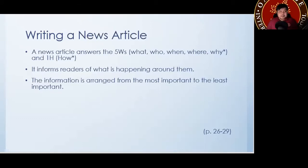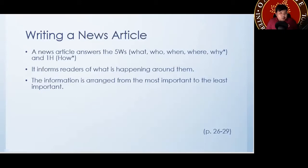Sometimes certain things that happen — the most important thing is the what, so they start with the what, the who, the when, the where. Or sometimes the who is more important, and then followed by the what, the when, and the where. So all of these things are different ways of identifying what a news article is.